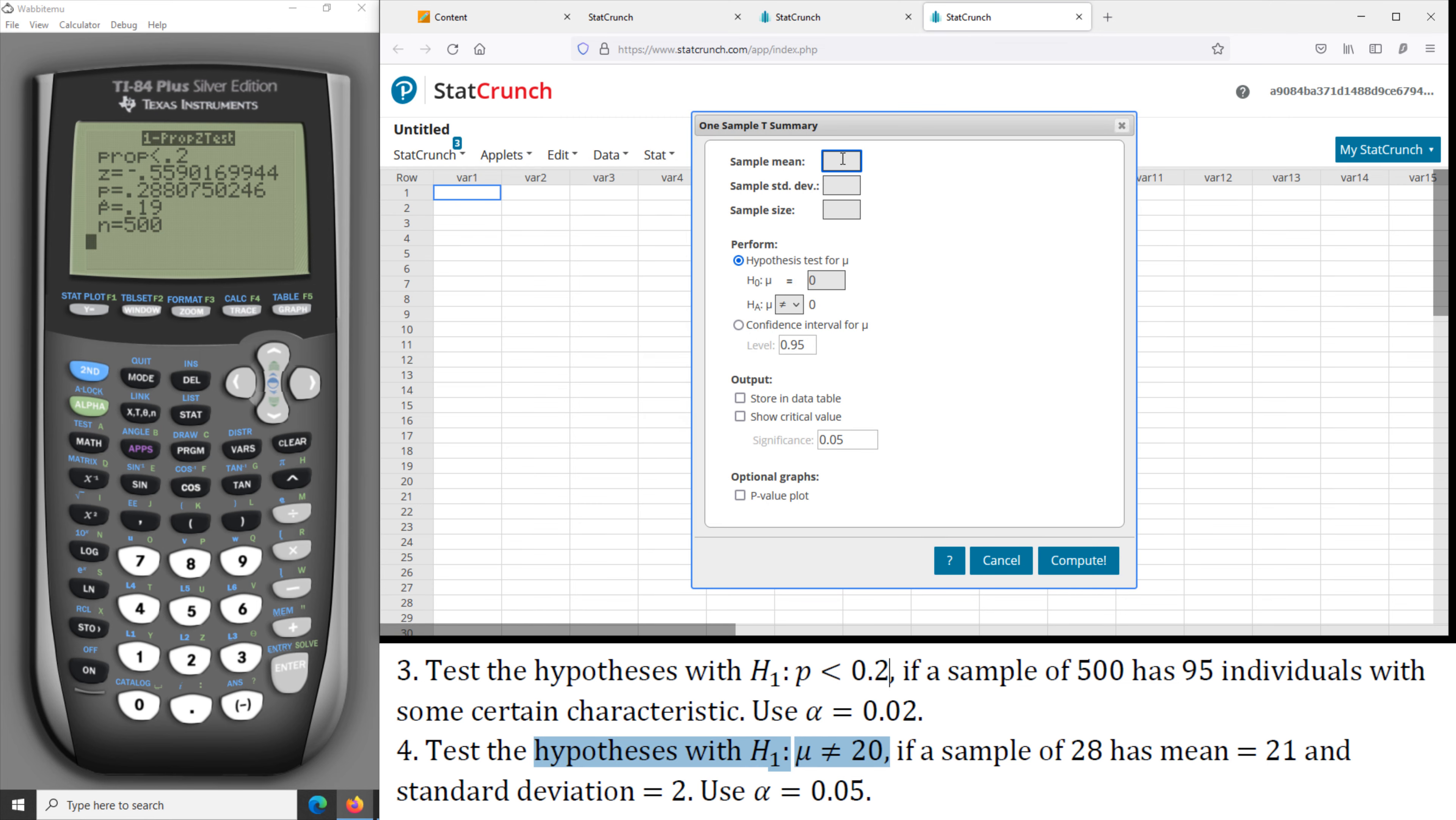So we enter the information: the mean equal to 21, standard deviation of 2, and the sample size of 28. And we test the hypothesis that the mean is not equal to 20. So we enter 20, and that is not equal to, and alpha is 0.05.